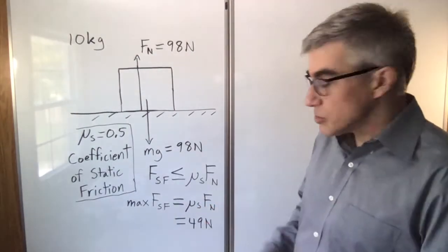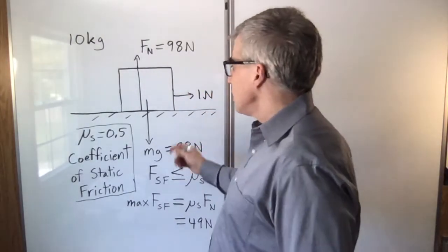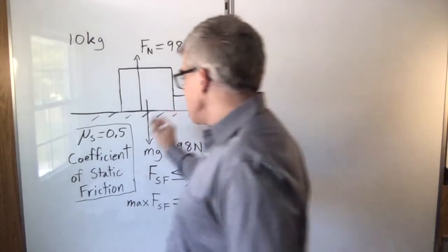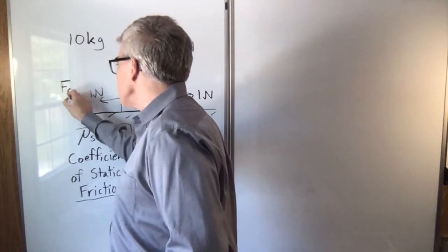What does that mean in practical terms? It means if I pull with one newton, the box doesn't move. That's less than 49 newtons. But in order for it to hold still, there must be a force this way of one newton and that is the force of static friction.